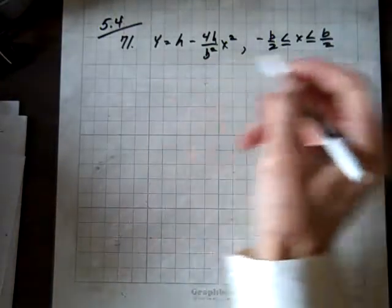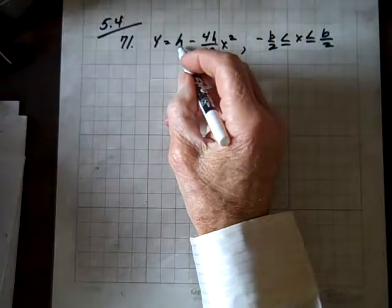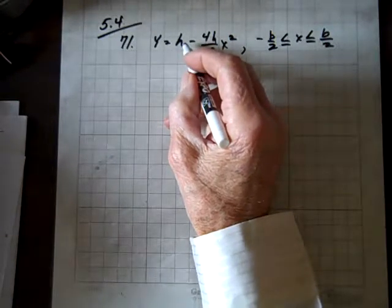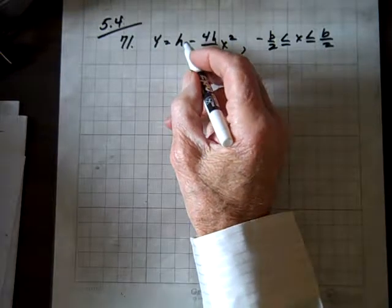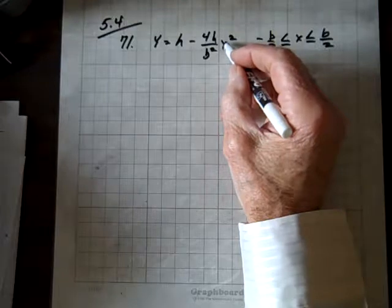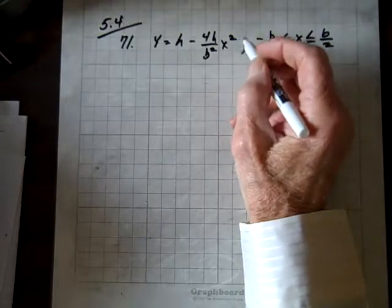I want to point something out. This is an even term, because this is h times x to the zero power, and zero is an even value, so this term's even. This term's even too, because this is x to the second, and two is even.